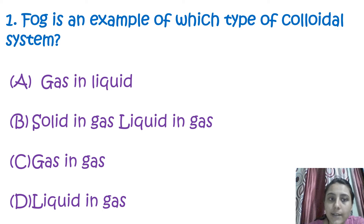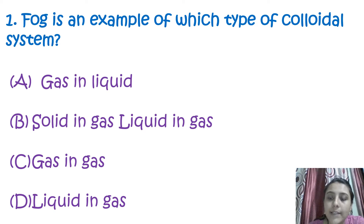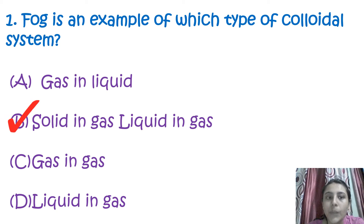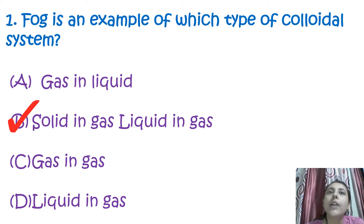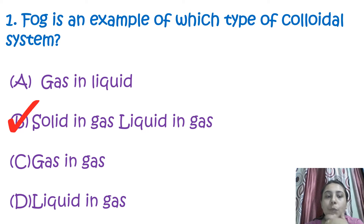Our first question is: fog is an example of which type of colloidal solution? The correct answer is solid in gas and liquid in gas. Fog is a mixture of solid and liquid particles suspended in air, so the correct answer is solid in gas and liquid in gas.